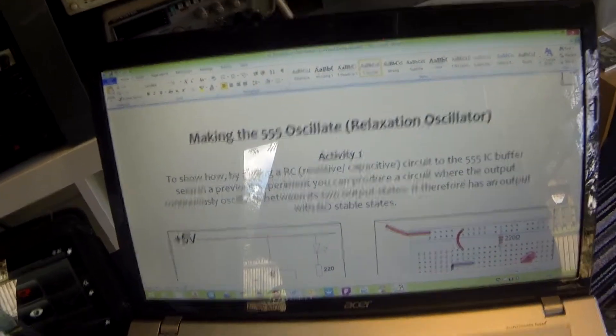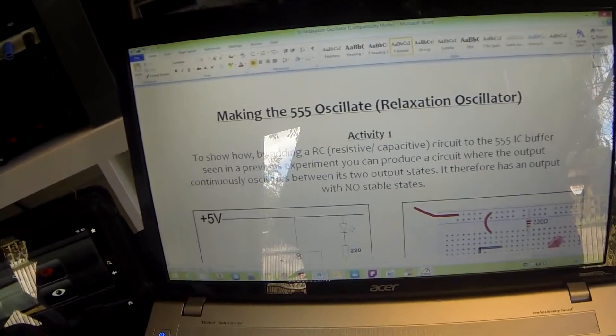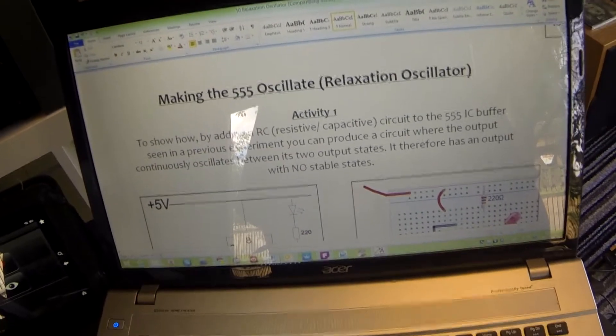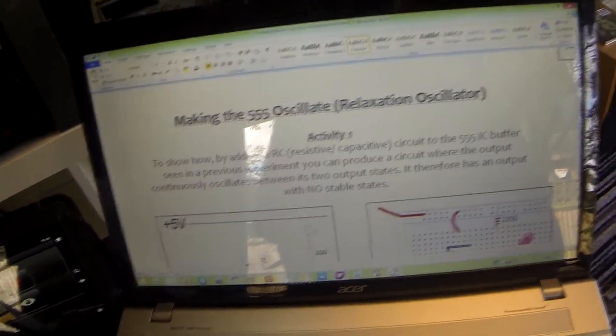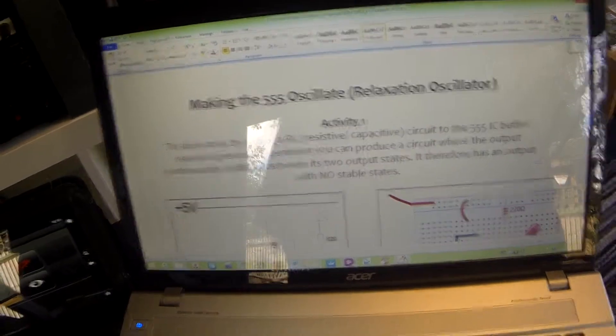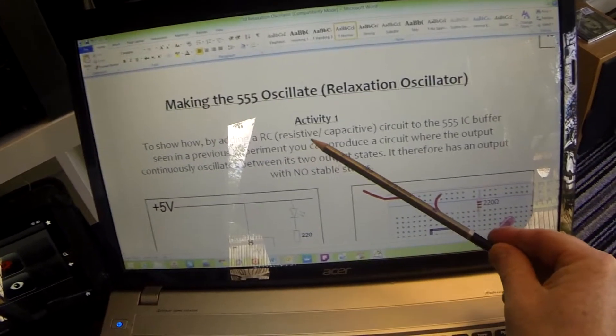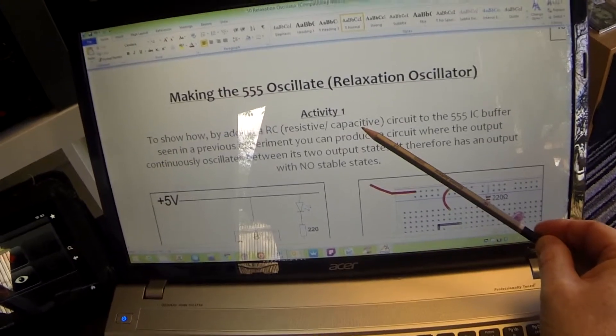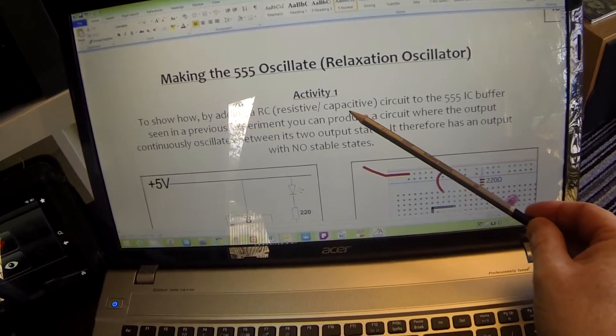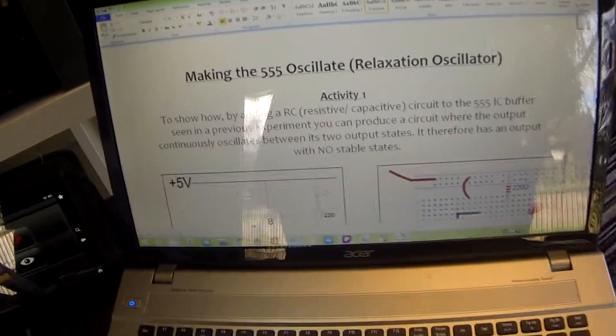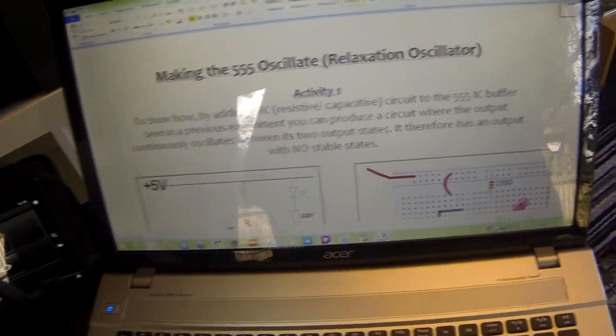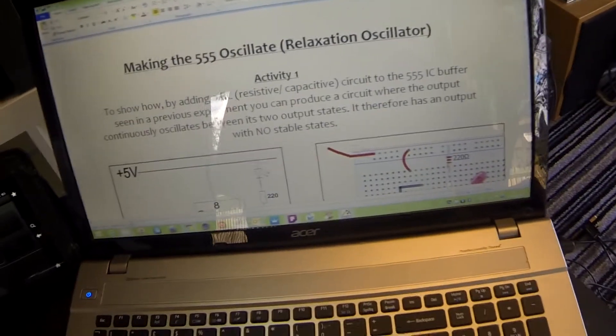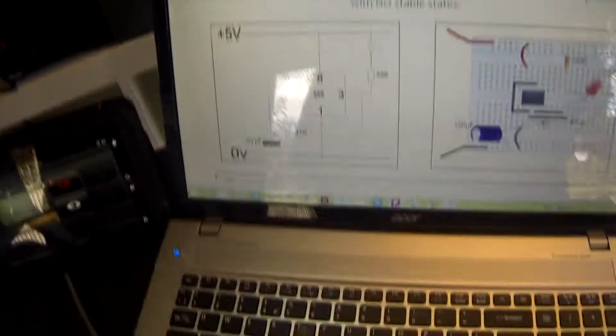Welcome to tutorial 10. In this experiment we're going to be making the 555 oscillate. This is known as a relaxation oscillator because of the way that it's configured. We're going to be showing how when you add a resistor capacitor circuit - and we looked at capacitors charging and discharging in the last tutorial - and we're going to add those to a 555 IC buffer that we looked at previously, and see what circuit we produce.